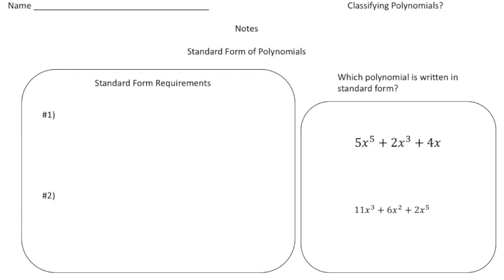Hey everybody, Dr. Nelson here. This is a video about standard form of polynomials. The first two pages of your notes you're going to follow along with me, and then there'll be some problems for you to try on your own. In order for a polynomial to be written in standard form, there are two main requirements that you have to follow. The first one is that the polynomial has to be simplified.